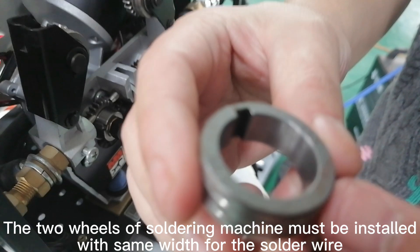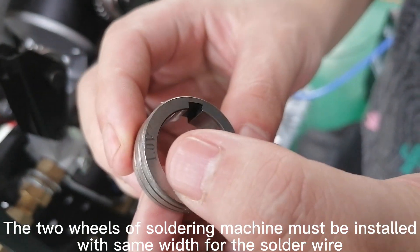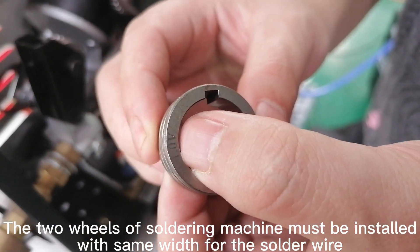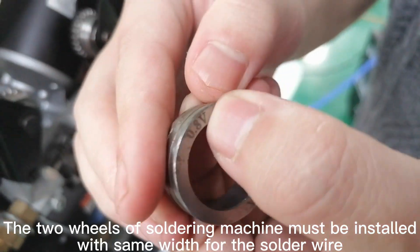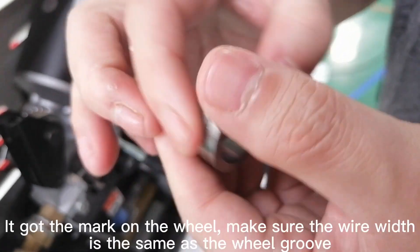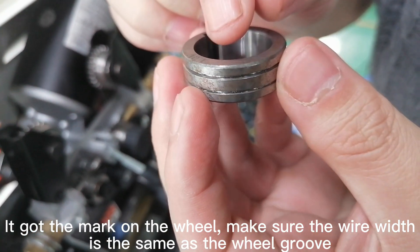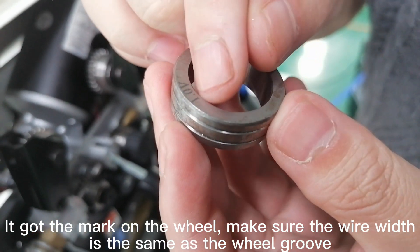The two wheels of soldering machine must be installed with same width for the solder wire. It got the mark on the wheel, make sure the wire width is the same as the wheel groove.